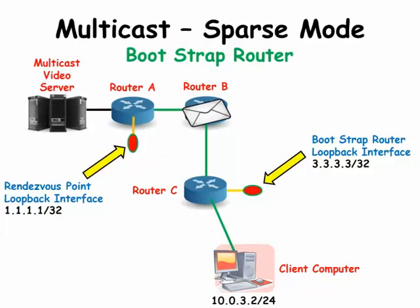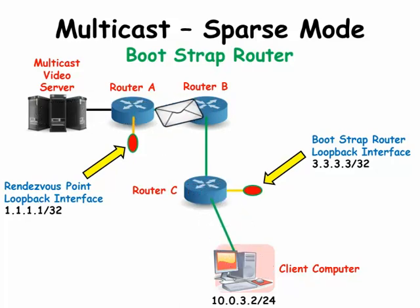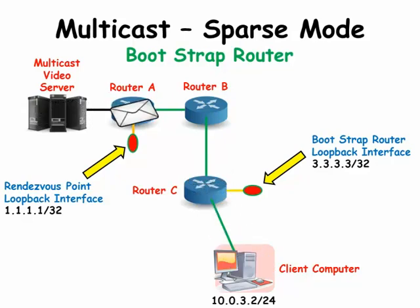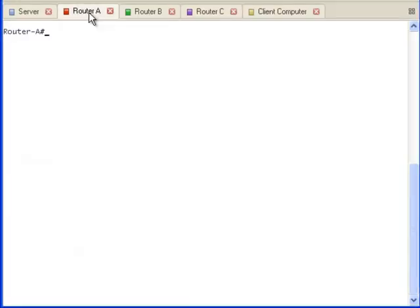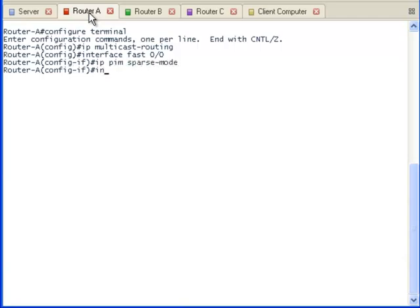Again, let's look at the diagram of our simple network. The first step is to verify that the unicast traffic is working correctly, and we have already done that. The second step is to configure multicasting on all the routers that will be forwarding multicast traffic. Let's configure all the routers for multicast routing using the IP multicast routing command. We will also configure all the interfaces that will be participating in multicast with the sparse mode protocol.